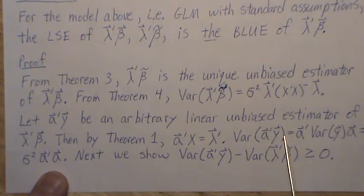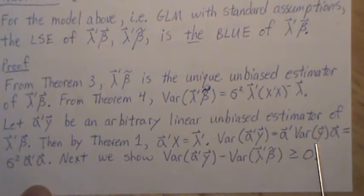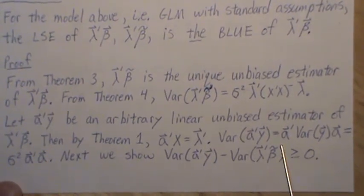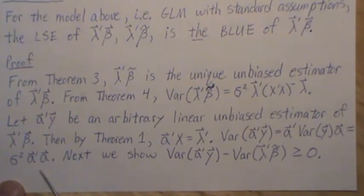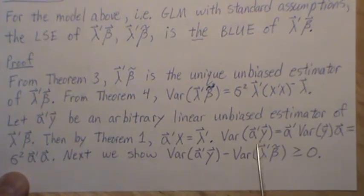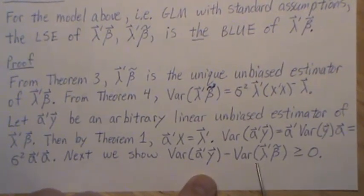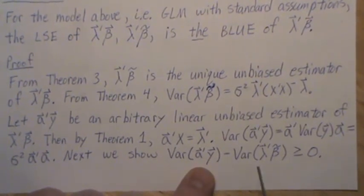The variance of a prime y: you have to take the a out front and transpose it out back, so you get this. This is sigma squared I, so sigma squared comes out front and the I goes away. So this is the variance of any linear unbiased estimator.